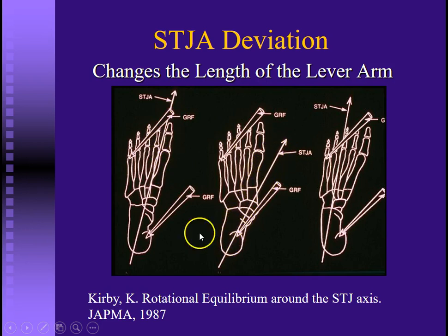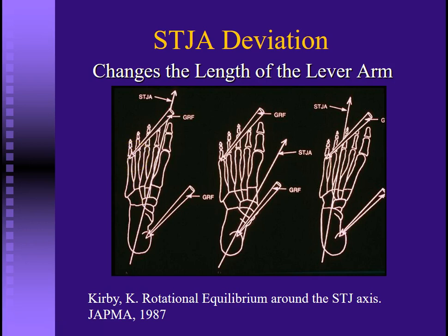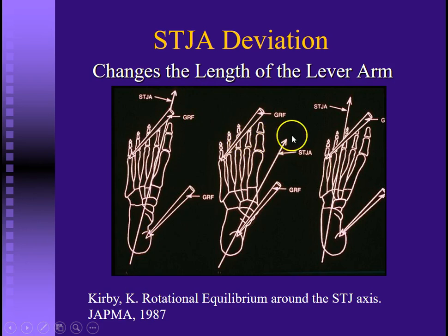Looking at the bottom of the foot, we have forces acting on either side of that axis. Ground reactive forces pushing up on the medial side of the axis apply a supinatory torque, and pushing up on the lateral side applies a pronatory torque. To stop pronation, we need to be pushing up on the medial side of that axis. In the flat foot, that axis deviates medially, leaving a much smaller area where a supinatory torque can be applied to stop excessive pronation.